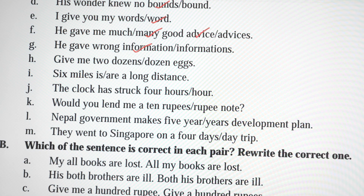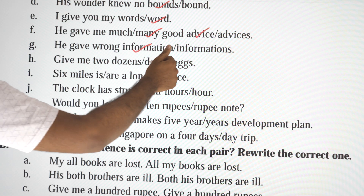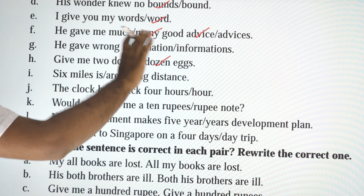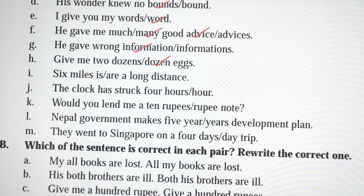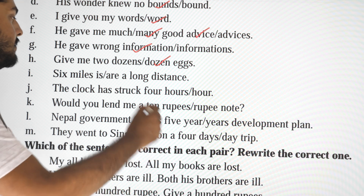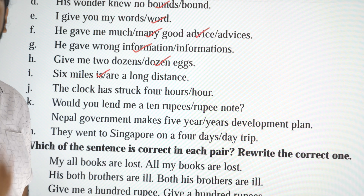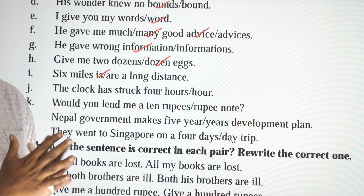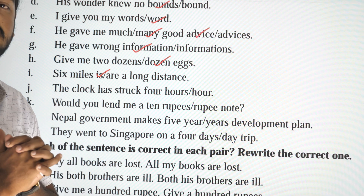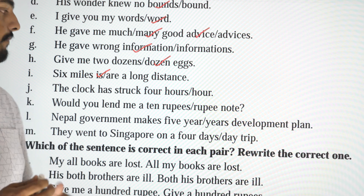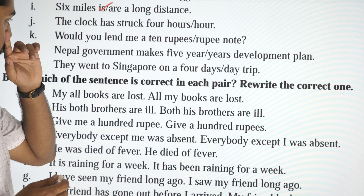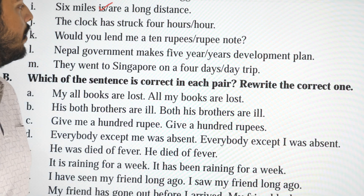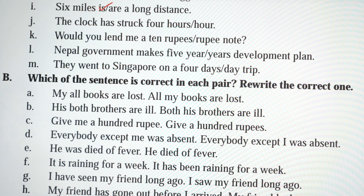Give me two dozen eggs. Kilometres are measuring distance, that's why singular. The clock has struck 4 hours.